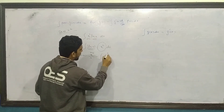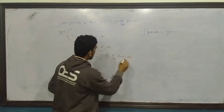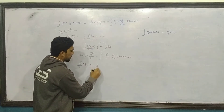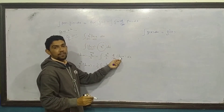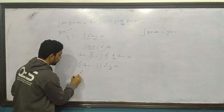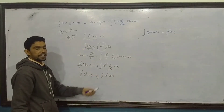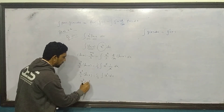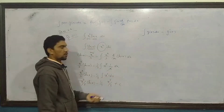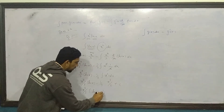Formula apply karte hain: first function log of x as it is, integration of x squared deta hai x cubed over 3. Minus integrated function x cubed over 3, times derivative of first function log of x jo hai 1/x. Ek x cancel ho gaya, bacha x squared. Toh x cubed over 3 times log of x, minus 1/3 times integration of x squared, jo hai x cubed over 3. Final answer: x cubed over 3 log of x minus 1/3 times x cubed over 3, plus constant.